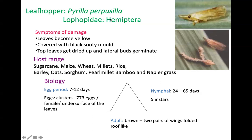Coming to the biology — since it is a hemipteran insect, it has three stages in its life cycle. The adult is brown with two pairs of wings folded roof-like, and lays eggs over a span of seven to twelve days, laying more than 700 eggs. The eggs hatch into nymphs, which have five instars, completing development in 24 to 65 days.